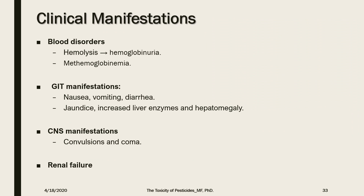Clinical manifestations of naphthalene toxicity include hemolytic anemia with hemoglobinuria. Naphthalene toxicity is also one of the causes of methemoglobinemia. Acute oral and subchronic inhalation exposure has resulted in neurotoxic manifestations — confusion, lethargy, vertigo — and gastrointestinal distress. Hepatic effects include jaundice, hepatomegaly, and elevated liver enzymes. Renal effects may lead to renal failure.